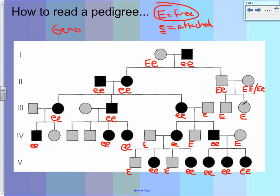Whenever there's not enough information to tell, you have to list both possibilities — like I did here. If you don't do that, I'm going to take off points. If you were to just put big E, big E, you're telling me you know that for certain, but you don't. You have to say what the possible combinations are. So these kids also have to be listed as big E, big E or big E, little e.